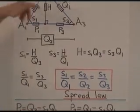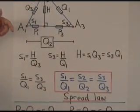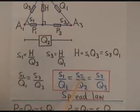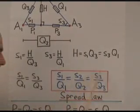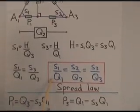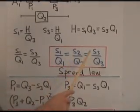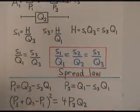And because the triangle is completely symmetrical, we can extend it to also equal s2 over q2. And we write it like this, the spread law: s1 over q1 equals s2 over q2 equals s3 over q3 in any triangle.